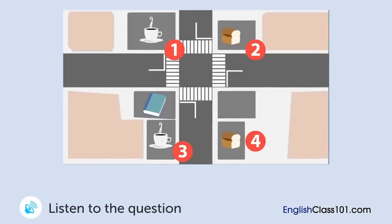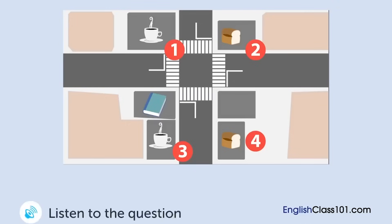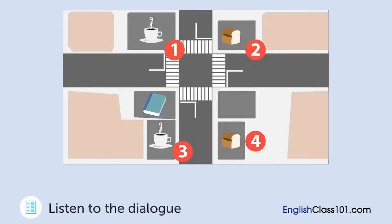A woman is waiting for a man. Where is the woman now? — 'Hey, really sorry, but it looks like I'll be 30 minutes late.' 'Okay, I'll wait for you at the café.' 'Café? Where is it?' 'It's next to the bookstore. There's a bakery across from the café.' 'Okay.'